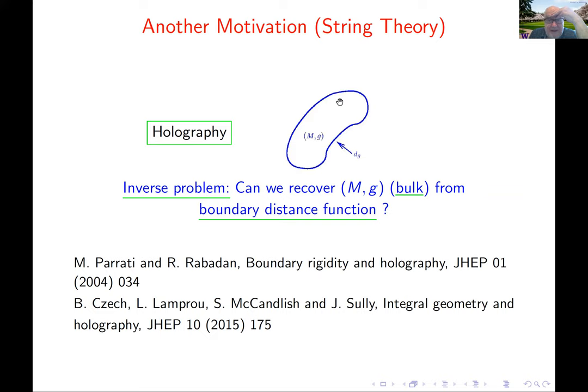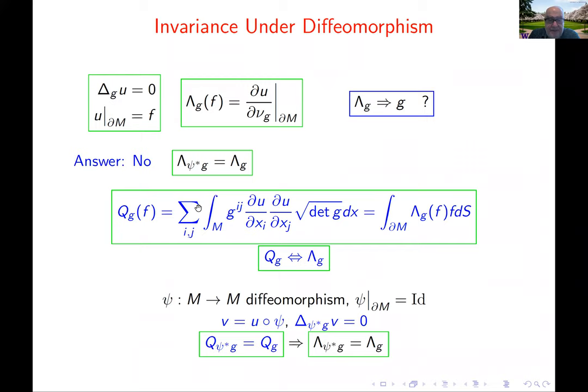Another motivation comes from holography: can we recover the bulk from the boundary distance function or the Dirichlet-Neumann map measured on the boundary? This raises the question whether you can see the three-dimensional world in two dimensions — reflecting everything in the two-dimensional boundary. The Dirichlet-Neumann map is also invariant under diffeomorphisms: if you take the pullback of the metric under a diffeomorphism that is the identity on the boundary, you get the same Dirichlet-Neumann map.